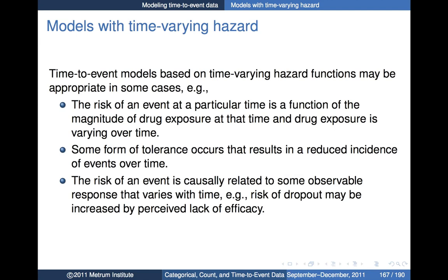Let's talk about models with time-varying hazard — we're still talking about time-to-event data. There are a number of cases where this might be relevant, particularly in pharmacometric applications. A fairly typical one is where we wish to model the hazard as a function of drug exposure. The risk of an event at a particular time may be a function of the magnitude of drug exposure at that time, and drug exposure may vary over time, particularly if measured by plasma concentrations.